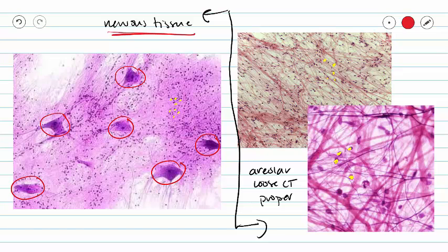And if we take a look at our areolar tissue, there are no large masses that might be counted as cell bodies. So you are going to be looking out for these cell bodies. And those cell bodies are a giveaway that you're looking at nervous tissue.